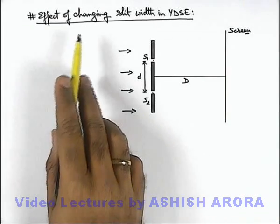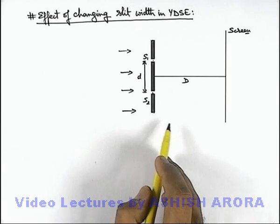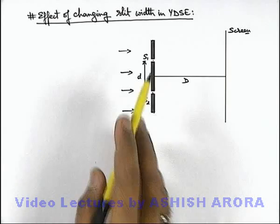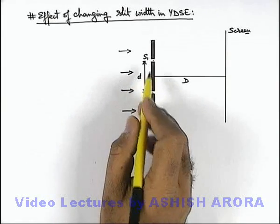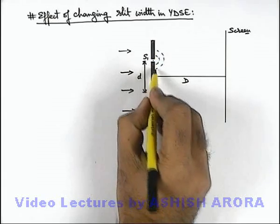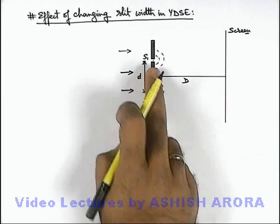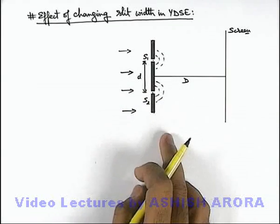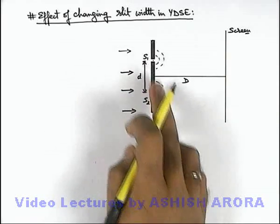Now we'll study the effect of changing slit width in YDSE. Here you can see this is a typical YDSE setup. On a slit plane, a light beam incident illuminates the two slits. From the two slits, cylindrical wave fronts are produced in the forward direction, and the interference effect produces a fringe pattern on the screen.